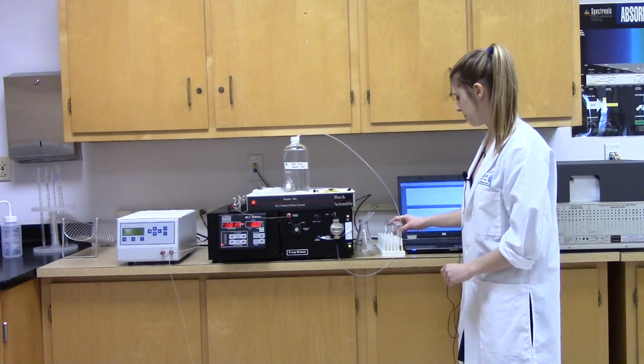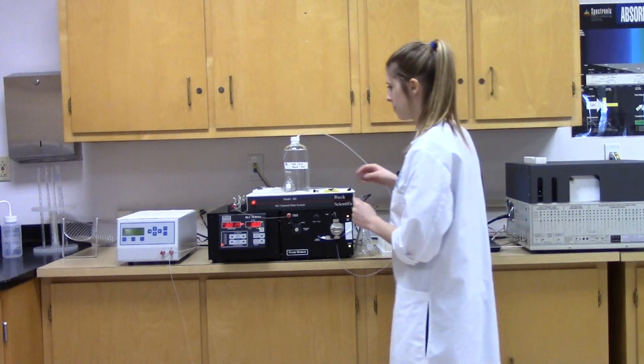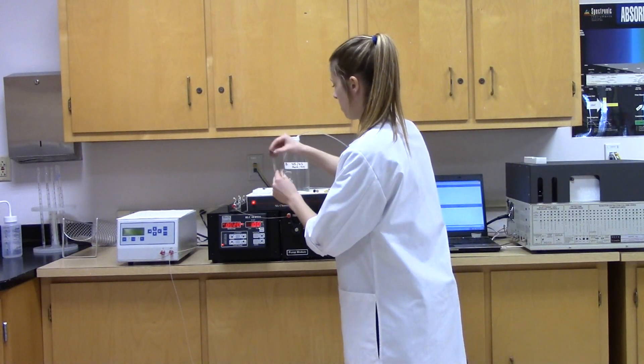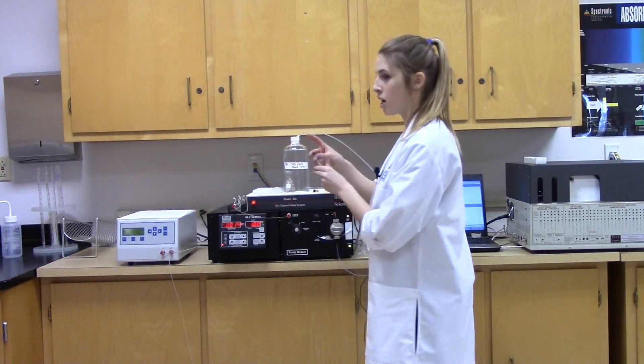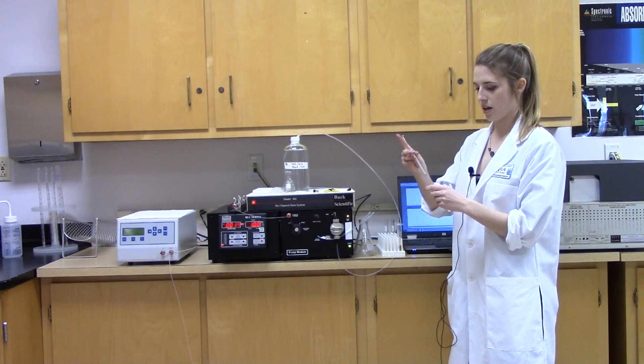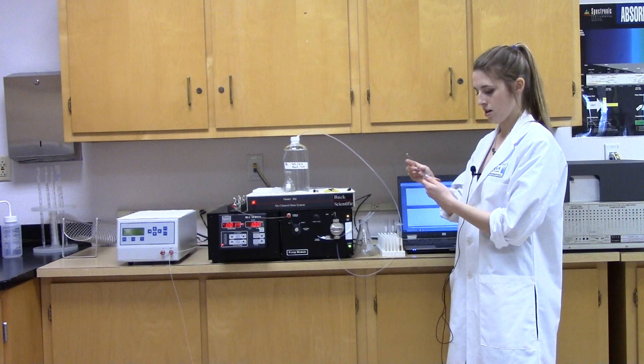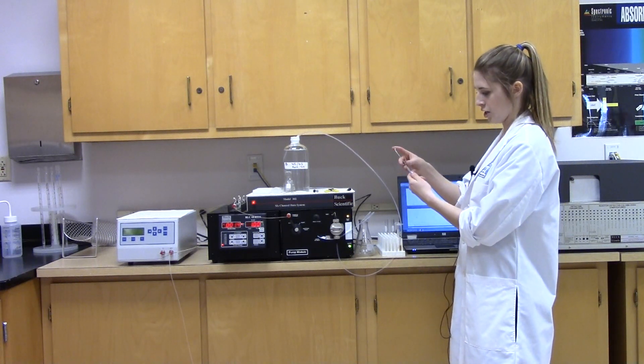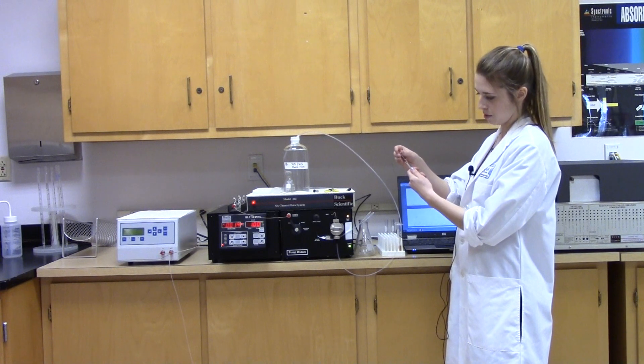So now we're going to inject our pure caffeine into the system. You take the test tube, and you can uncap it. There is a 100 microliter syringe you take. You can put this into the test tube. Try to avoid having it touch the bottom, and you're going to push it out first to release all the air.